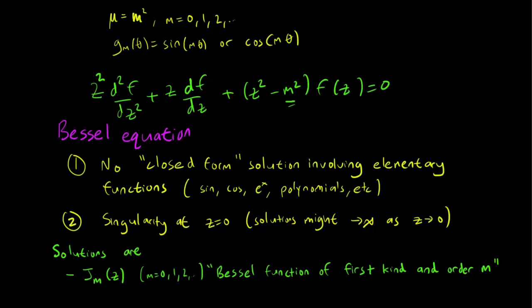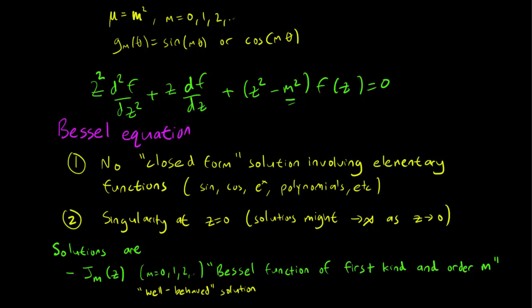Now, J_m(z) is known as the Bessel function of the first kind and order m. It's also known as the well-behaved solution. This is because this solution doesn't go to infinity as z approaches 0, even though there's a singularity in the Bessel equation.